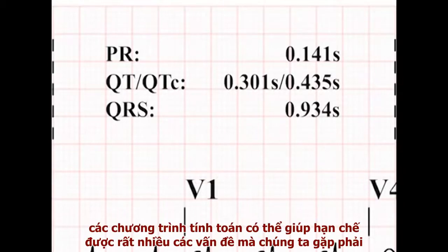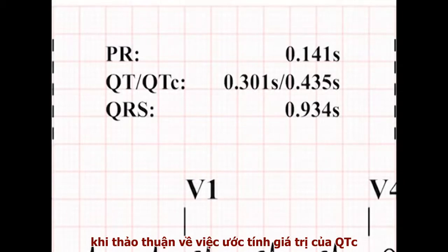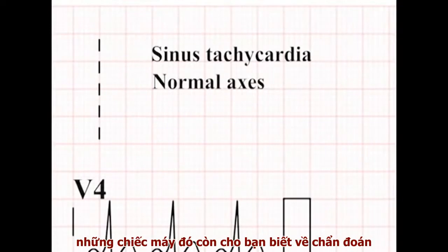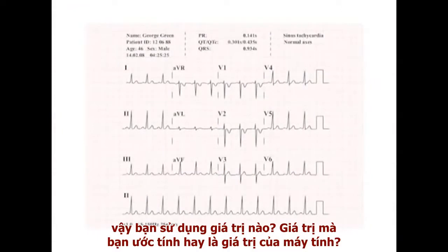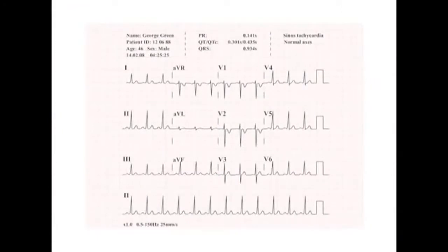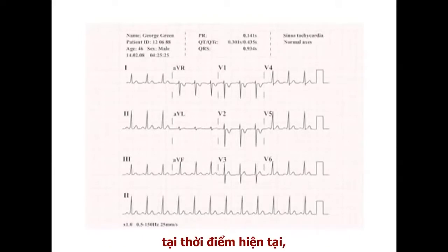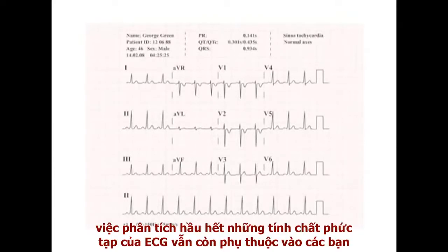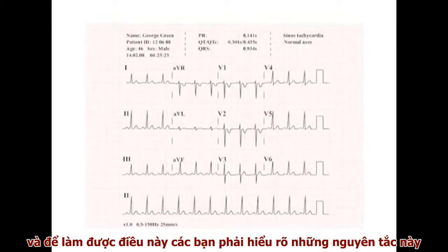Exactly the same problems exist for the analysis of the PR interval and the QT interval, and modern machines will present you with an integrated value calculated using all 12 leads. The computerised calculations attempt to eliminate many of the problems outlined when discussing estimation of the corrected QT. These machines will even present you with a diagnosis. Both your own estimates and the computer's have merits, but it is important to realise that computer analysis has its own difficulties and limitations. At the present time, the analysis of the most complex ECGs still rests with you, so you must be able to do it from basic principles.